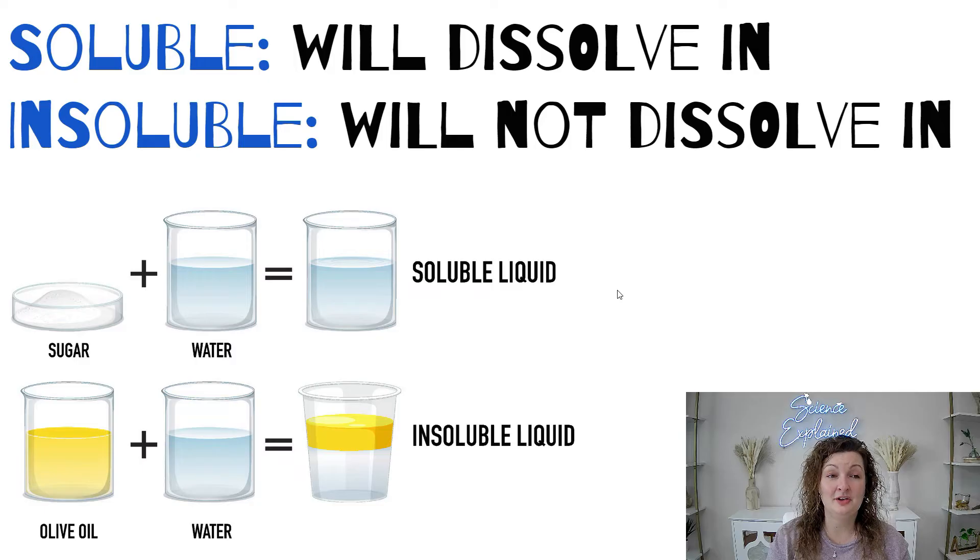Some more vocab you need to know: soluble and insoluble. Soluble means it will dissolve in a certain substance. For example, sugar will dissolve in water, therefore it is soluble. Olive oil will not dissolve in water, therefore it's insoluble.